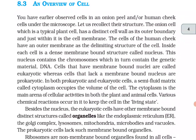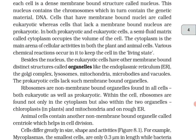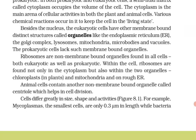In both prokaryotic and eukaryotic cells, a semi-fluid matrix called cytoplasm occupies the volume of the cell. The cytoplasm is the main arena of cellular activities; various chemical reactions occur in it to keep the cell in the living state. Besides the nucleus, eukaryotic cells have other membrane-bound distinct structures called organelles like the endoplasmic reticulum, the Golgi complex, lysosomes, mitochondria, microbodies, and vacuoles.